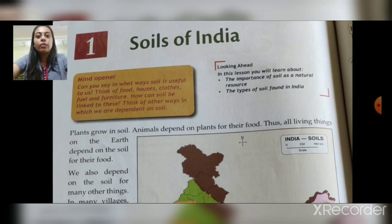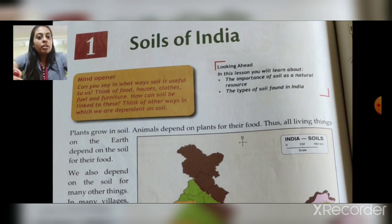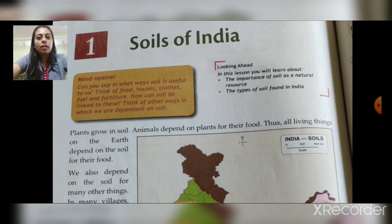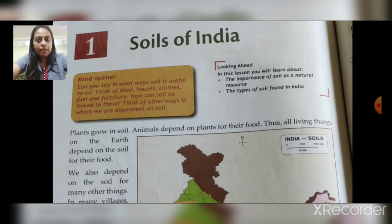In science you might have learned about the food chain. From where does the food chain start? From the producer, or plants. Plants grow first, they make their own food, and then we are able to take food from the plants. Plants grow in the soil, and animals also depend on the soil for their food. Animals depend on plants, so indirectly they are also dependent on the soil.